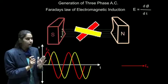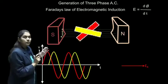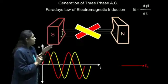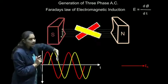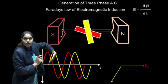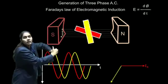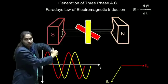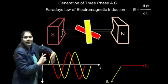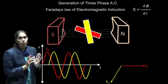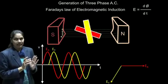If we plot the resultant phasor of EY, it will be lagging from ER by an angle of 120 degrees.